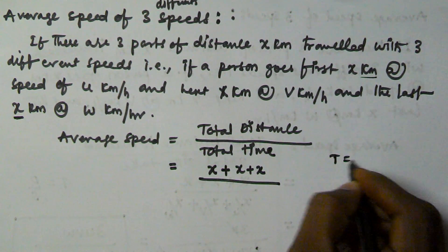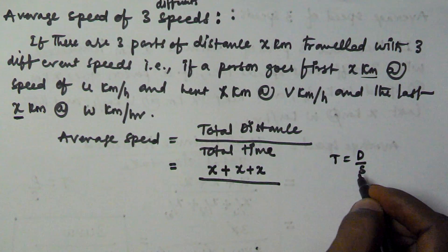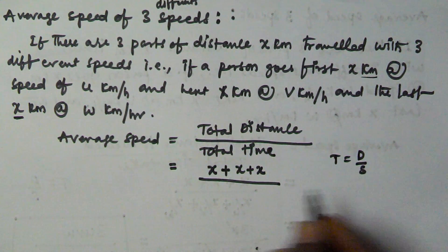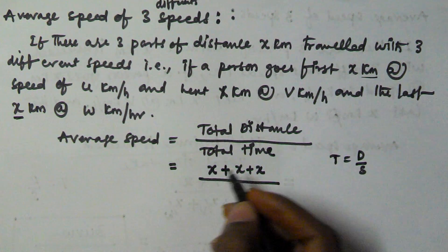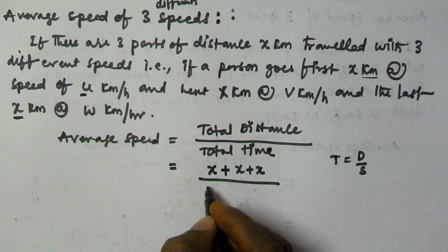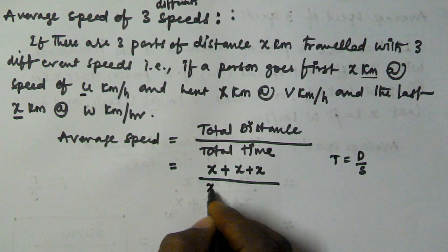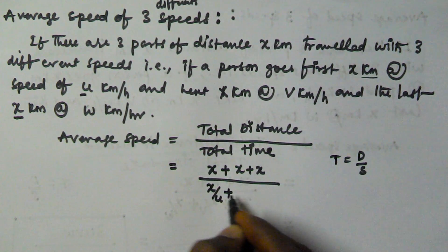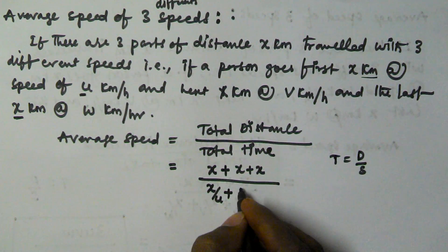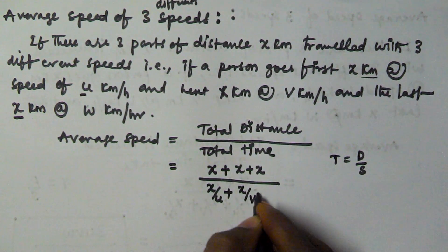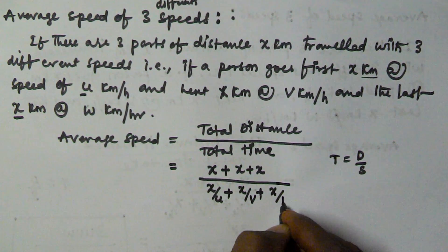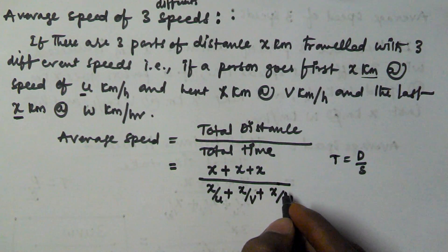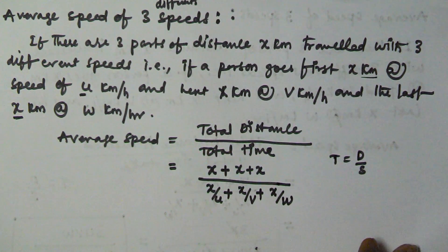So now the total time taken. So to travel x km, as we know, time is equal to distance by speed. So to travel x km at speed u km per hour, the time taken to travel this first x part is x by u. In the same manner, to travel this x part, the time taken is x by v. And to travel this x km, he used x by w time, that is hours time.